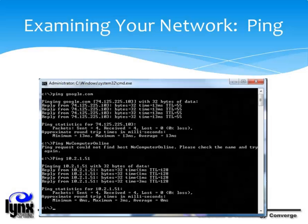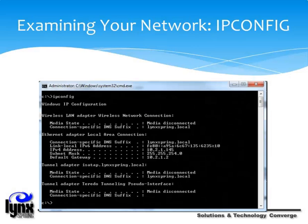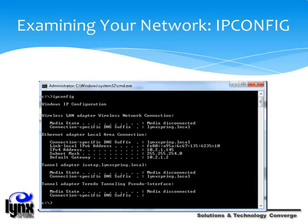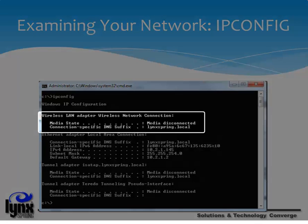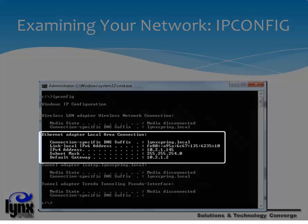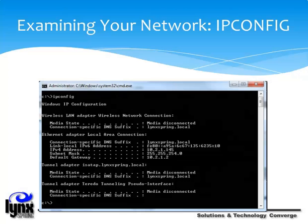This information can be a huge first step in configuring any device to work properly using a network. Another very useful command is ipconfig. This command displays all the current TCP/IP network configuration values and refreshes DHCP and DNS settings. Used without parameters, ipconfig displays the IP address, subnet mask, and default gateway for all adapters. In this example, the wireless adapter is disconnected because the laptop's wireless switch is turned off. The Ethernet adapter is the wired NIC, connected to the linkspring.local domain. The IP address is 10.2.1.145, the subnet mask is 255.255.254.0, and the default gateway is 10.2.1.2 — which is the network's router connecting to the internet.